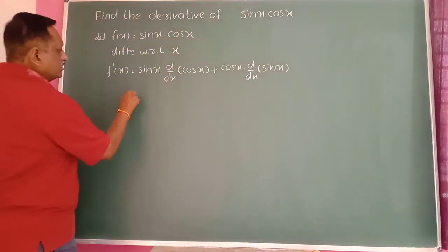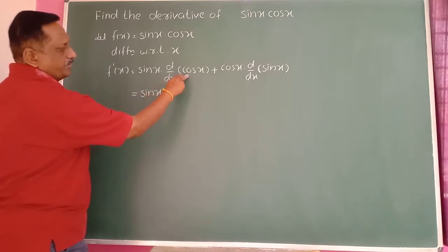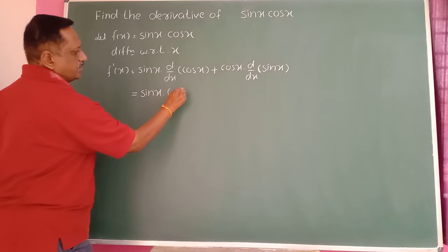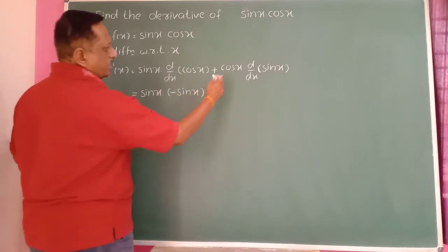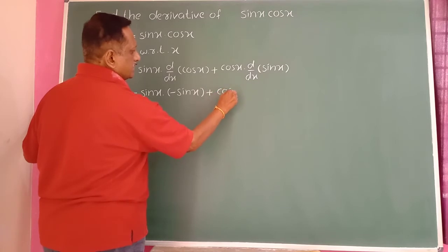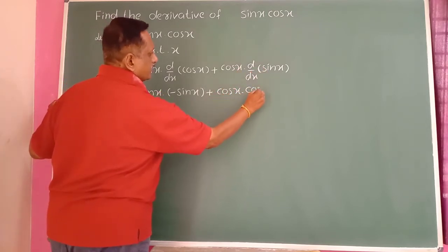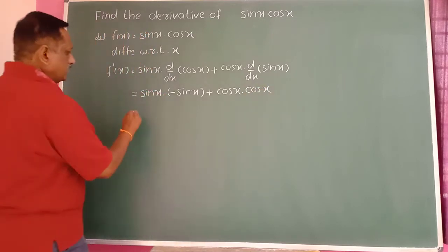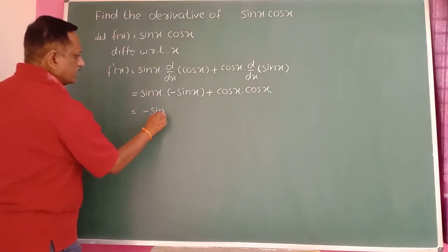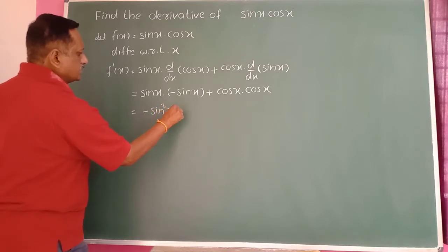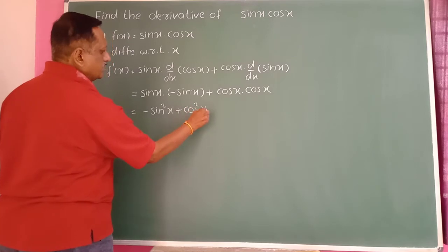This equals sin(x) into differentiation of cos(x), which is minus sin(x), then plus cos(x) as it is, into differentiation of sin(x), which is cos(x). Therefore this equals minus sin²(x) plus cos²(x).